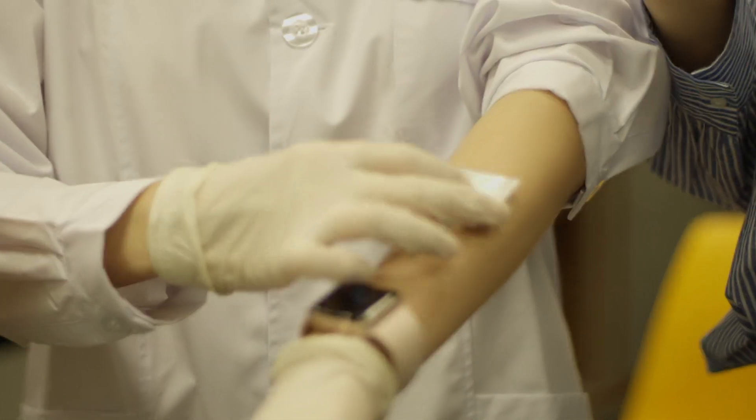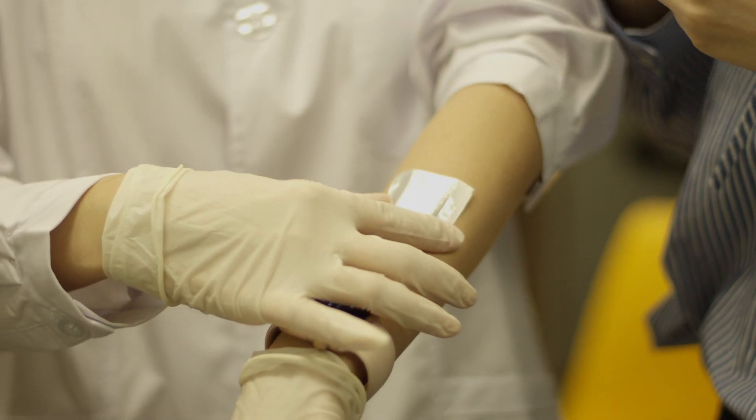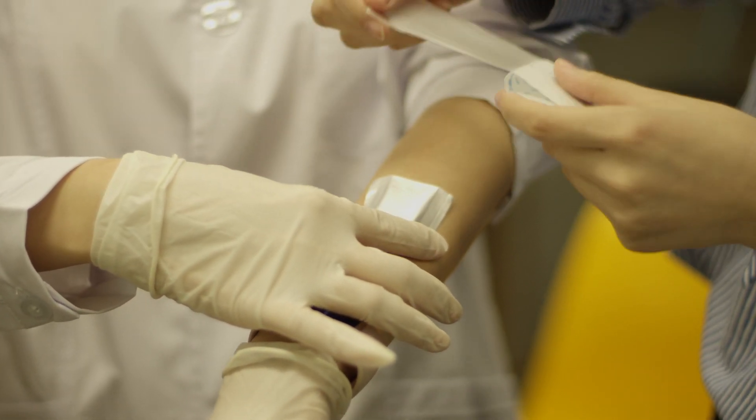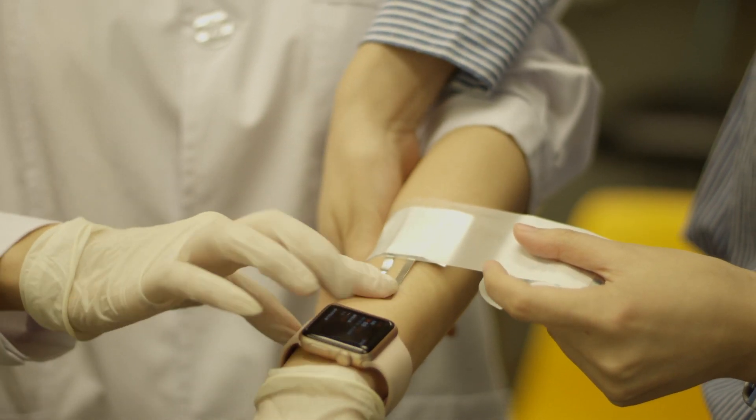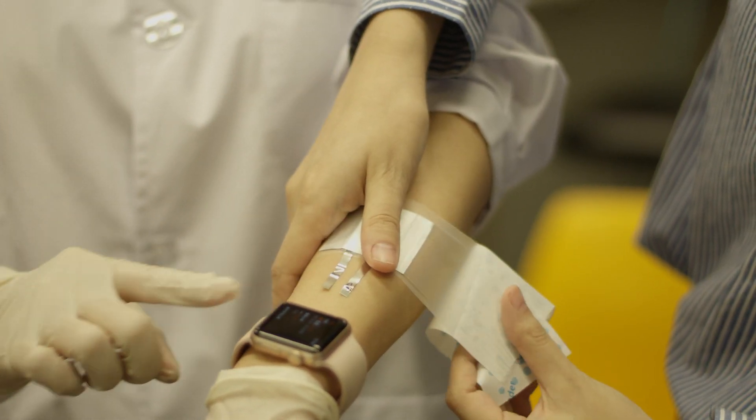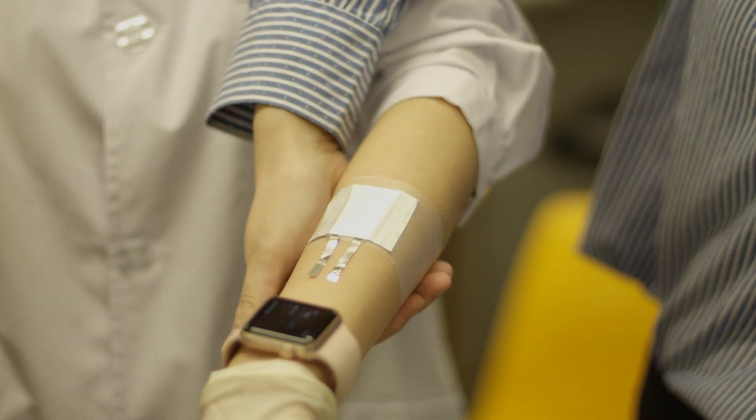If we can convert body heat to electricity and power some flexible sensing electronics, that'll be very cool. A human body is about 32 degrees Celsius and we have this 32 degrees all the time, so we are a permanent heat source, actually a big heat source.